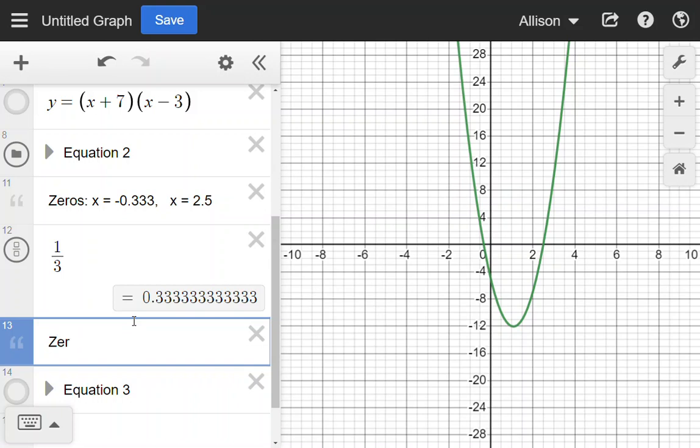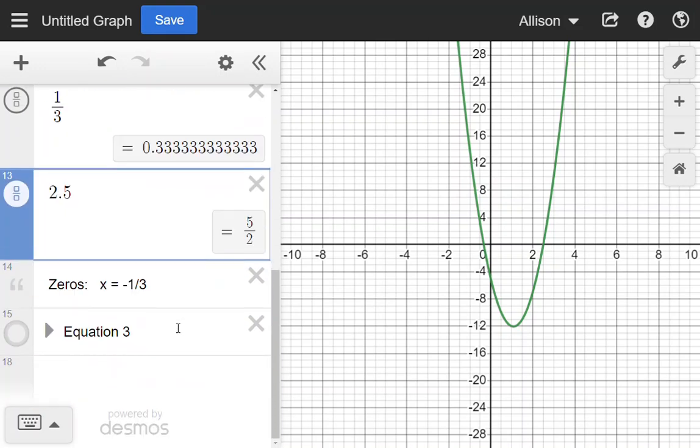So my zeros, the first one is x = -1/3. And the second one, 2.5. Since that one's not repeating, I can turn it into a fraction and I'll get 5/2. Or you could do 2 and 1/2, but it needs to be converted from a mixed number into an improper fraction.